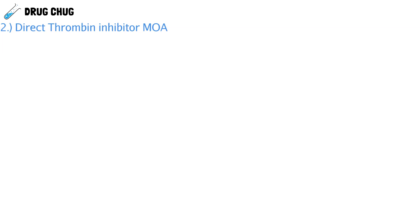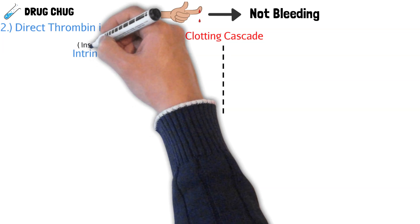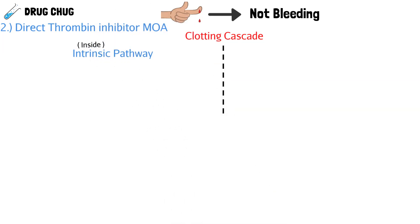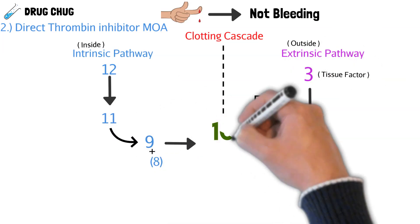Now that we've had a quick overview, let's go a step deeper and figure out how these direct thrombin inhibitors actually work — their mechanism of action. To do that, we need to talk about the clotting cascade. The clotting cascade is what stops you from bleeding when you have a cut. It involves a bunch of clotting factors: the intrinsic pathway, which is damage on the inside, and the extrinsic pathway, which is damage on the outside. All these clotting factors activate each other until we hit the common pathway.